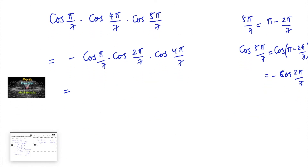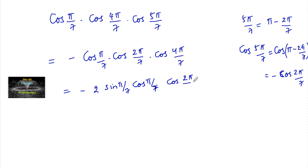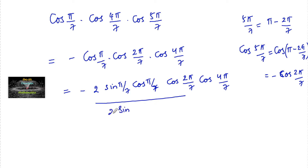Now, multiply and divide by sin(π/7) and introduce a factor of 2. This gives us minus times [2 sin(π/7) cos(π/7) · cos(2π/7) · cos(4π/7)] divided by 2 sin(π/7).